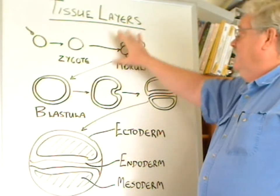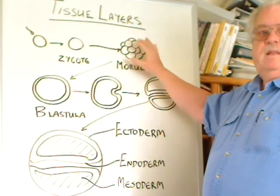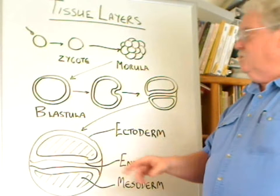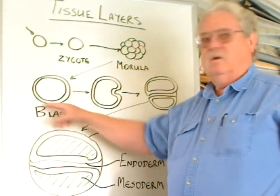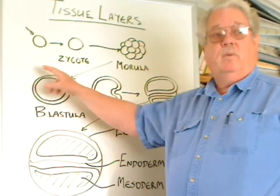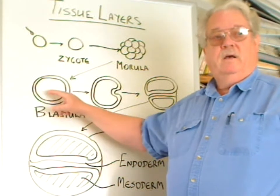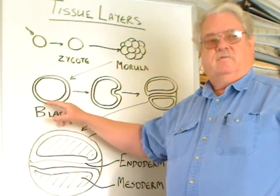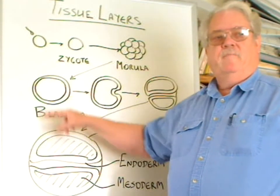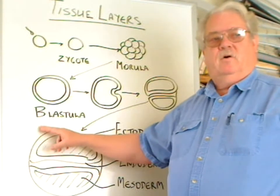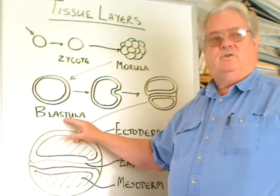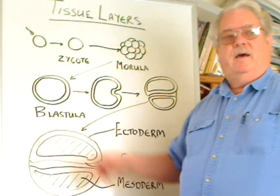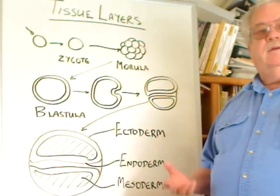These cells will continue to divide and move to the exterior, so that we eventually wind up with what looks like a hollow ball — hollow in the interior, with many tiny cells around the outside. This is called the blastula, and at this point we really have one kind of tissue.